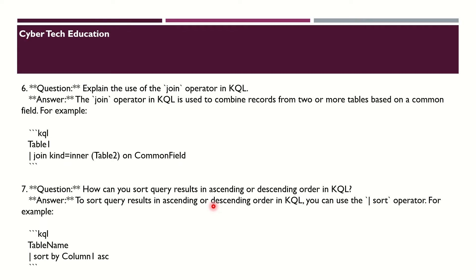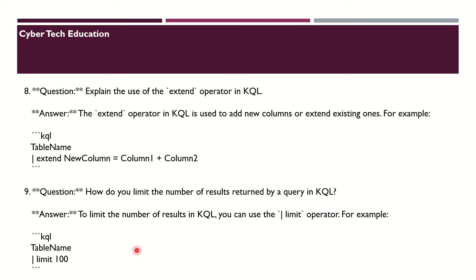The next question is: how can you sort query results in ascending and descending order in KQL? To sort query results in ascending and descending order you can use the sort operator. For example: TableName | sort by Column1 asc.